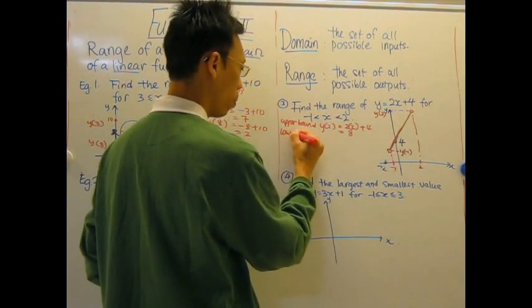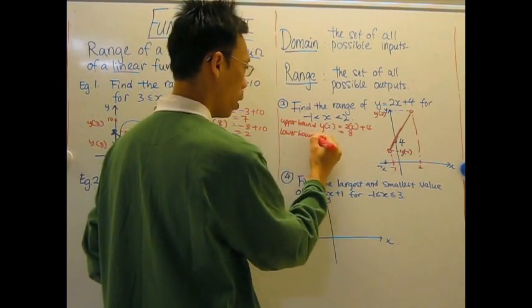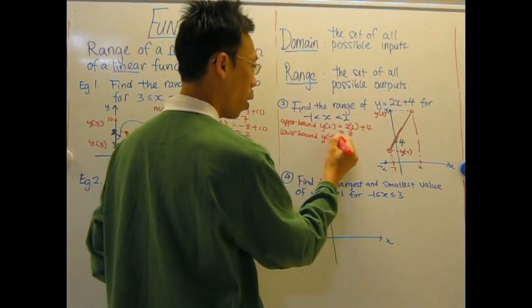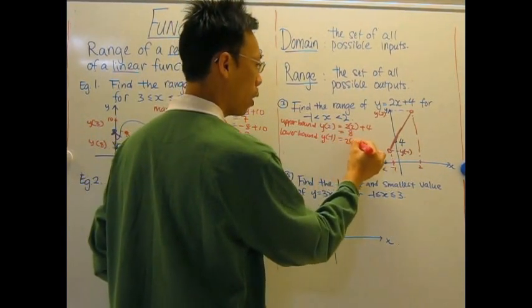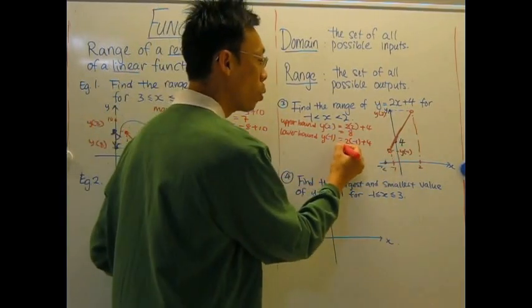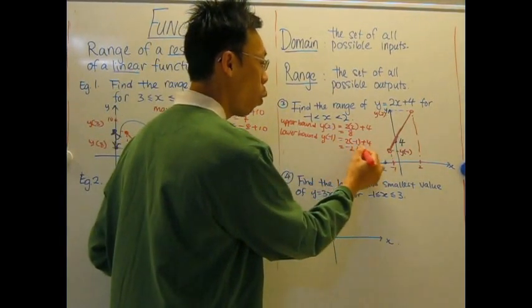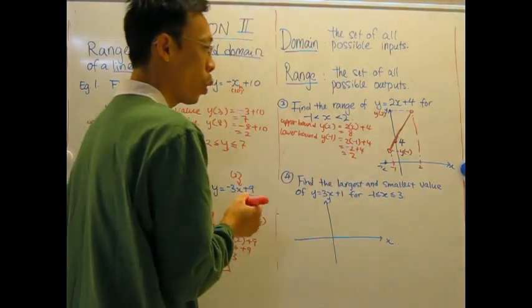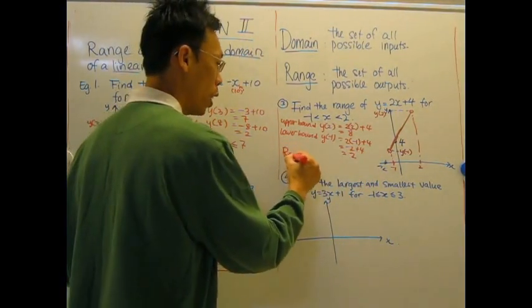And the lower bound is y of negative 1, which is 2 times negative 1 plus 4. So this is the lower bound. So it's negative 2 plus 4 is 2. So in this particular case, my range is...